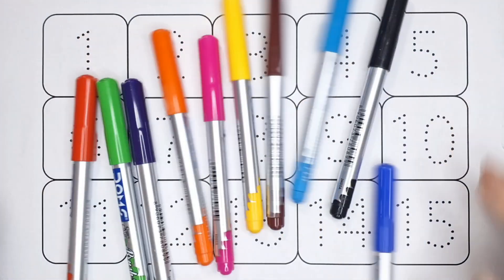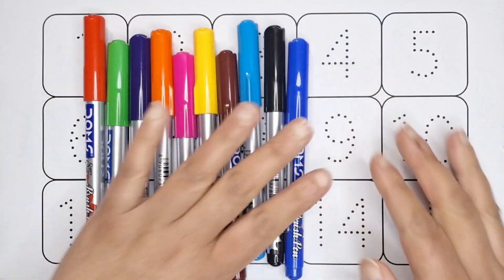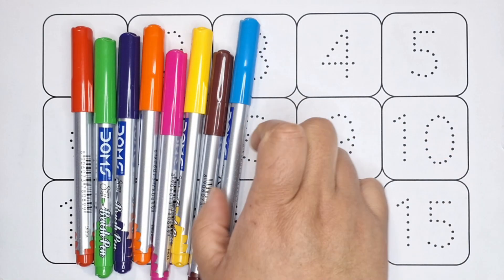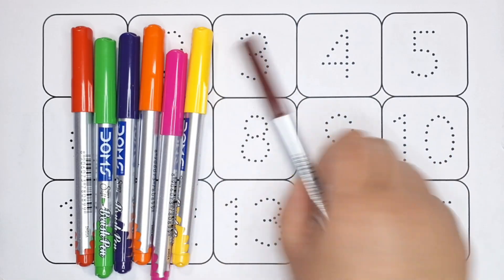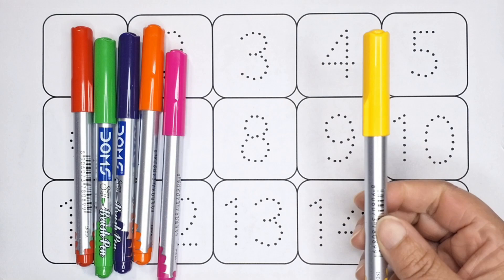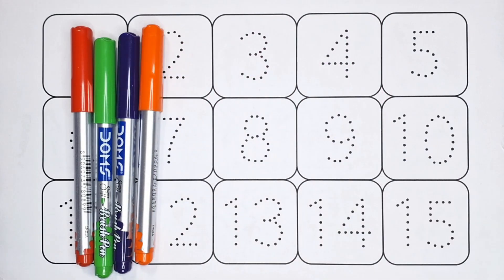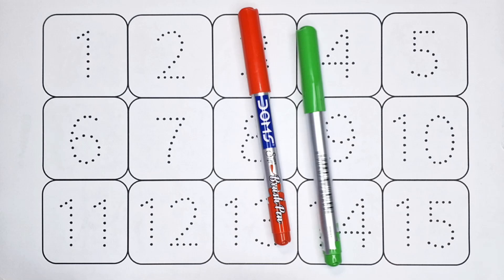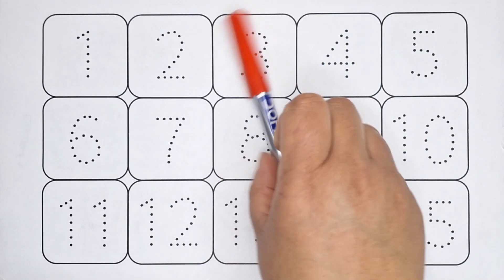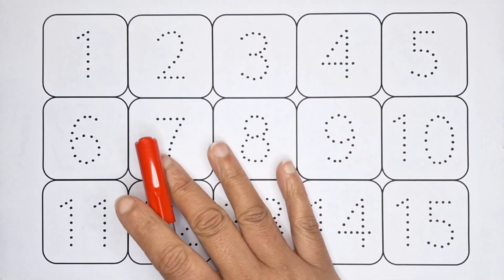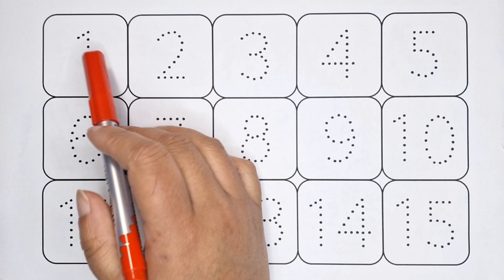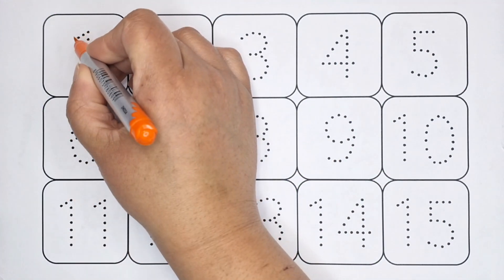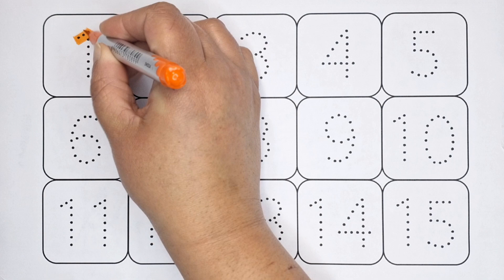Hello kids, let's learn color names. Blue color, black color, sky blue color, brown color, yellow color, pink color, orange color, purple color, green color, red color. Kids, now we will do numbers 1 to 15 counting.